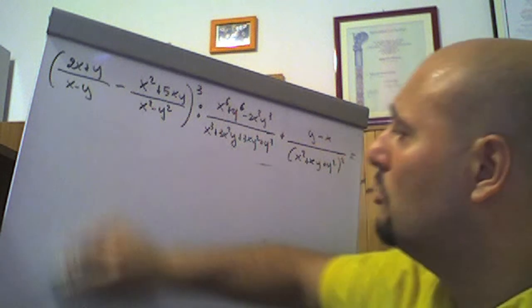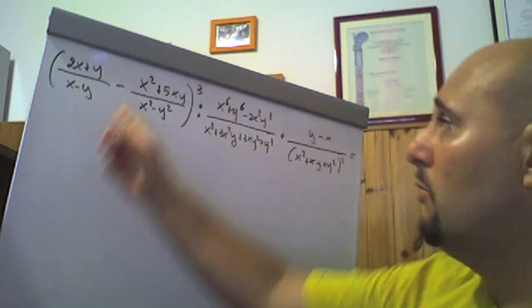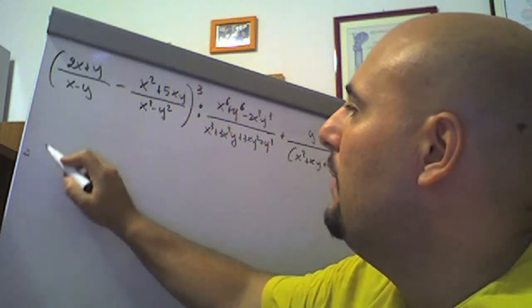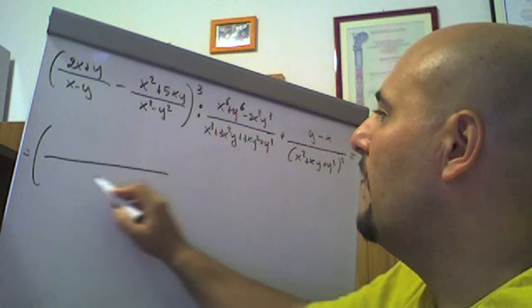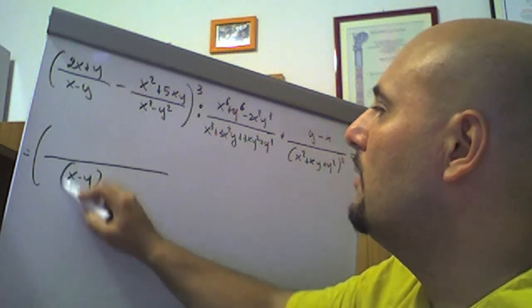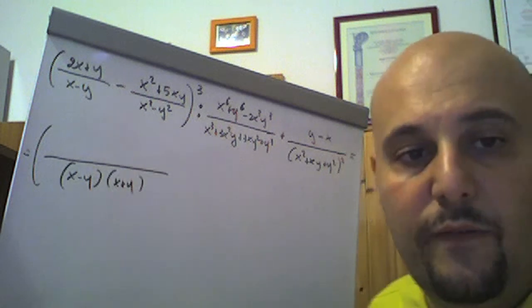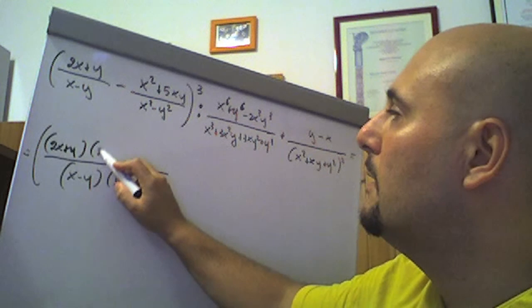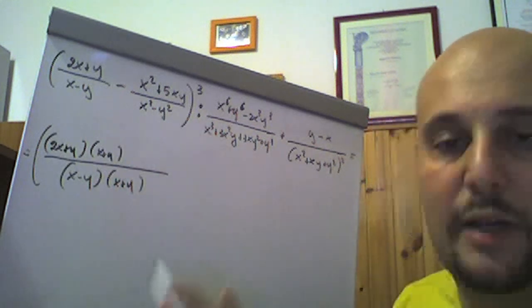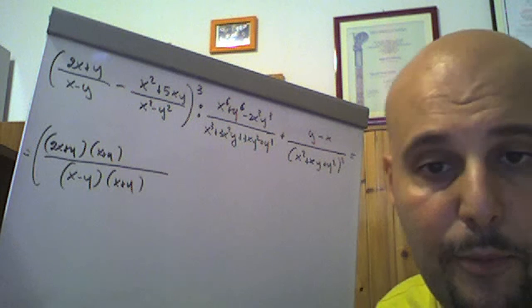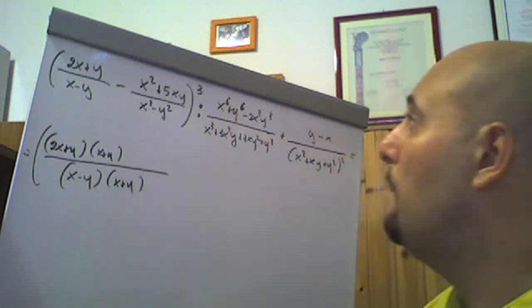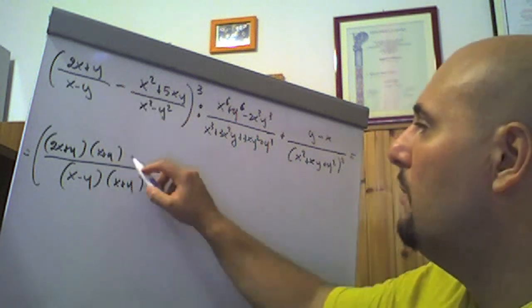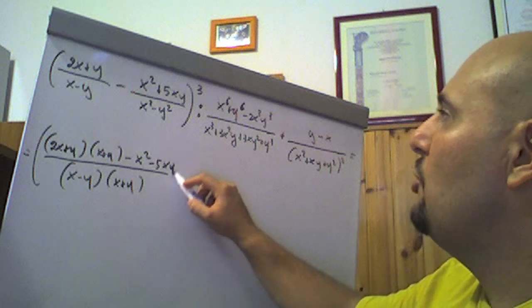Fatto questo, il discorso è molto semplice: dobbiamo eseguire quella somma algebrica dentro la parentesi tonda, che poi sarà elevata al cubo. Il minimo comune multiplo qui è sicuramente il prodotto fra (x meno y) e (x più y). Questo diviso (x meno y) fa (x più y): dobbiamo moltiplicare pertanto quel (2x più y) per (x più y). E poi, visto che il minimo comune multiplo è proprio x quadro meno y quadro, diviso x quadro meno y quadro fa 1, per quella quantità lì che è (x quadro più 5xy), cambiato di segno quindi meno x quadro meno 5xy.